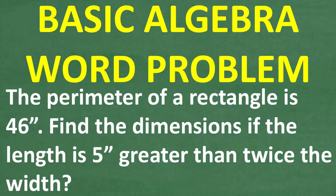Let's read the problem here. It says the perimeter of a rectangle is 46 inches. We're going to find the dimensions if the length is 5 inches greater than twice the width.